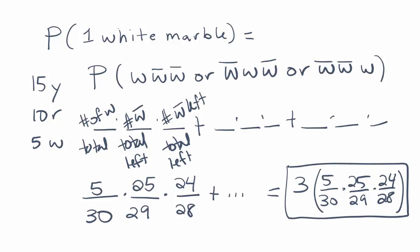And again, if you wanted to just see what the others would look like, I can pencil them up above here. They'll basically be non-white over total, white over total left, non-white left over total left. And then you do the same thing again. This time the white marble is at the back end,